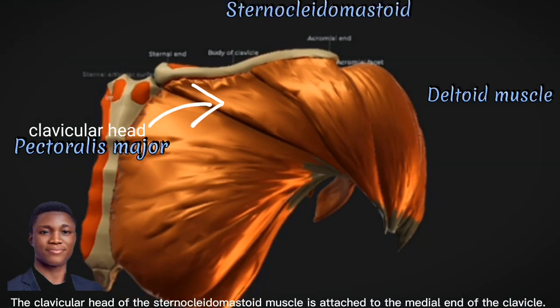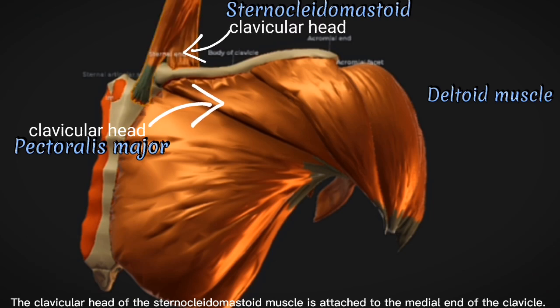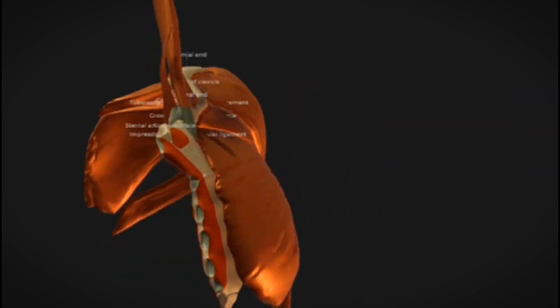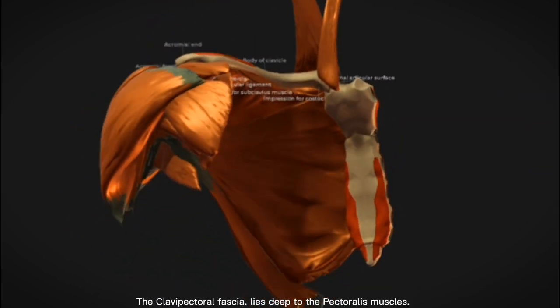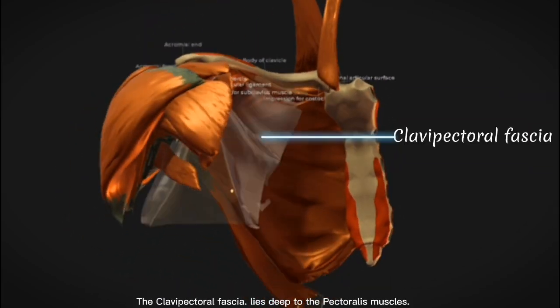The clavicular head of the sternocleidomastoid muscle is attached to the medial end of the clavicle. The clavipectoral fascia lies deep to the pectoralis muscles.